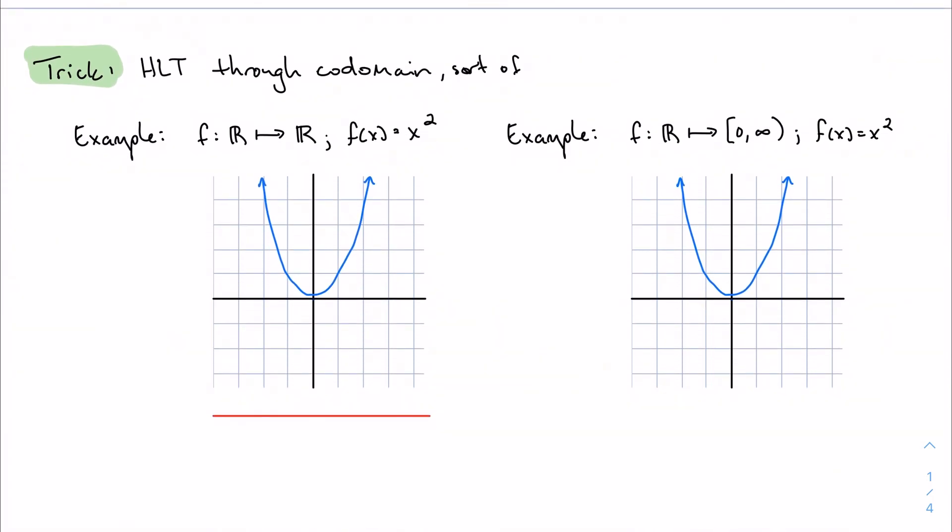The trick here is to use something similar to the horizontal line test, but we're only going to pass it through the codomain. As long as I can find function values everywhere over my codomain, then it's onto. Here's my first example where I'm going to use the entire real numbers. My codomain is the entire set of real numbers. If this is an onto function, I should be able to take this horizontal line and move it through the entire real number line on the y-axis. And uh-oh, you see right here that I don't get any function here. There are no function values here, so this is not onto.